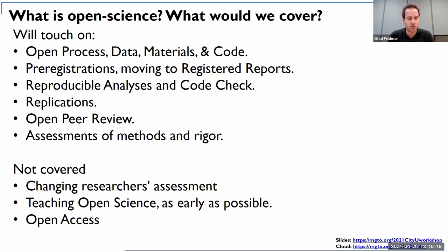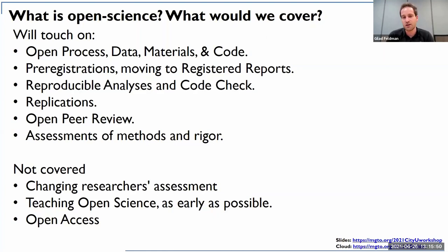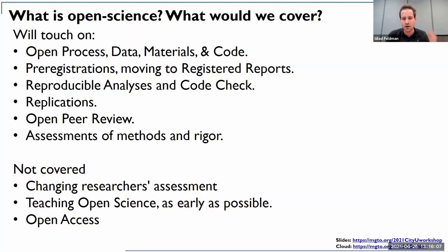Replications are a big part of what I've been doing at HKU. There's also open peer review and assessments of methods and rigor — we need to structure our evaluations of science better. There's a lot of trust placed in the system which we've shown we're not worthy of. We should know what happened to a manuscript while it went through peer review, and be able to assess published and unpublished research in terms of methods, rigor, and theory. Open access is another topic I won't be covering today.